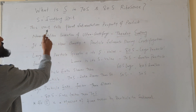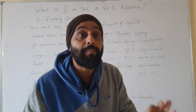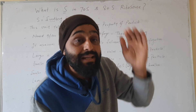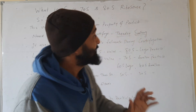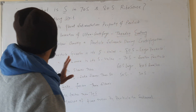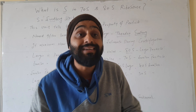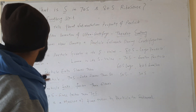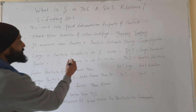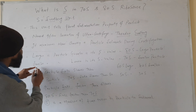So what is this S? This unit tells us about the sedimentation property of a particle — how fast or how slow a particle sediments during centrifugation. It measures how quickly a particle sediments during centrifugation. If a particle is large in size, it has a greater S value.